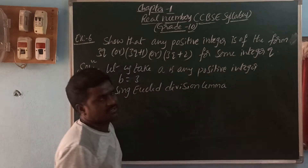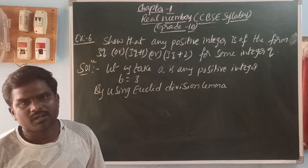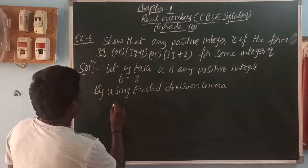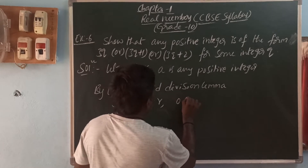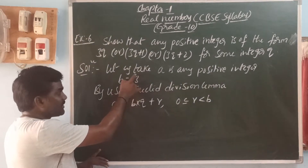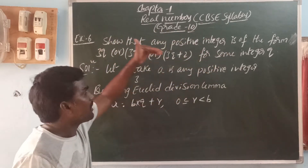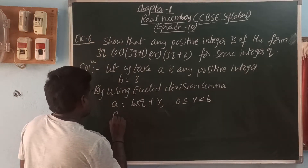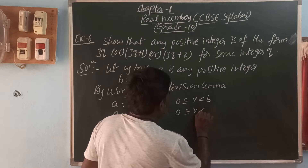What is the Euclid division lemma? Dividend equals divisor into quotient plus remainder. That is, A equals B into Q plus R. The condition for R is: it is greater than or equal to 0 and less than the divisor. Here, A equals 3Q plus R, and the condition is 0 less than or equal to R less than 3. How do you know 3 is the divisor? Because the problem asks to show any positive integer in the form of 3Q, meaning multiples of 3.